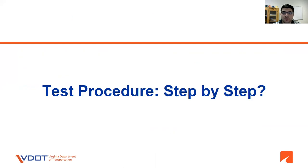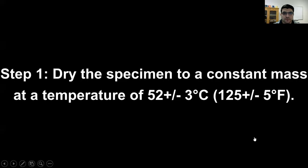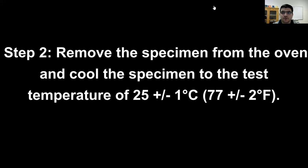The following segment presents step-by-step how to perform the Cantabro mass loss test procedure. Step 1: dry the specimen to a constant mass at a temperature of 52 plus or minus 3 Celsius degrees. Step 2: remove the specimen from the oven and cool the specimen to the test temperature of 25 plus or minus 1 Celsius degree.